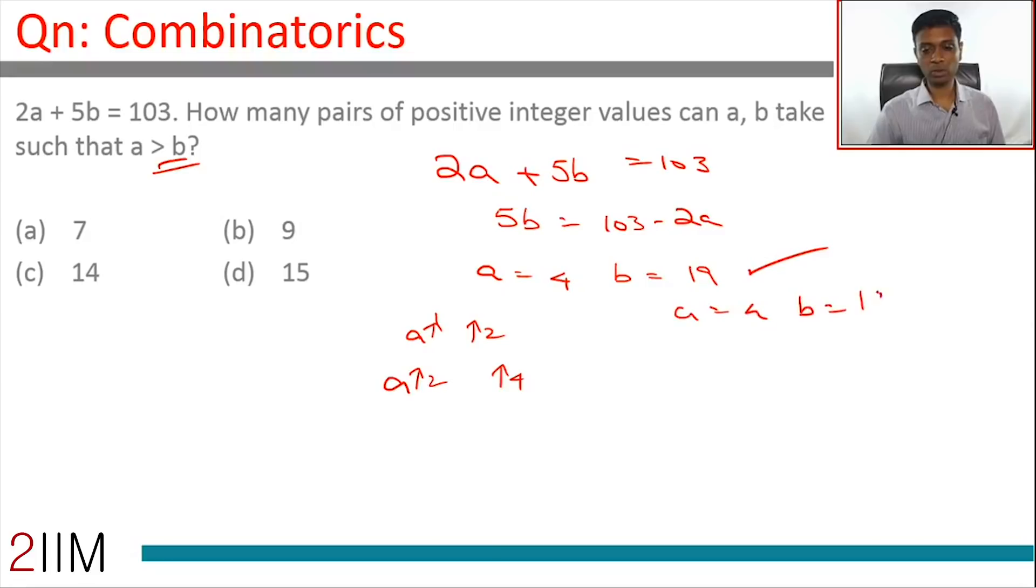What does this tell us? a equal to 4, b equal to 19 works. a equal to 9, b equal to 17 will work. a equal to 14, b equal to 15 will work. What are we doing here? We're just adding 5 to a and reducing 2 from b. 5 up in a and 2 down in b both create an impact of plus 10 and minus 10. The total remains the same.